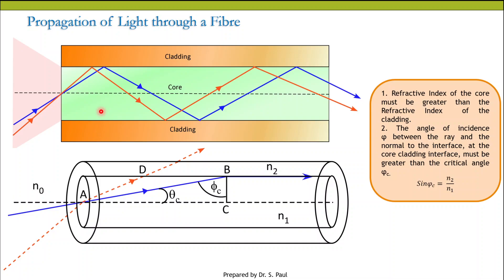Each reflection is total internal reflection, so the losses are negligible. Therefore, light can be carried over long distances and these fiber optics can act as a waveguide.